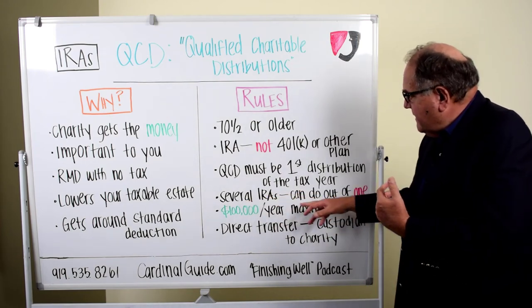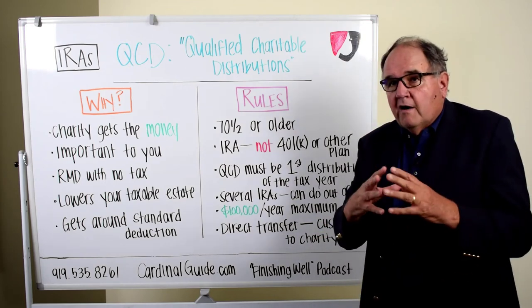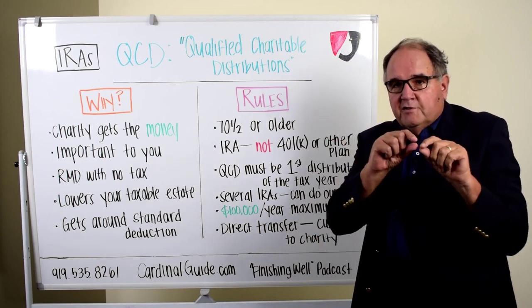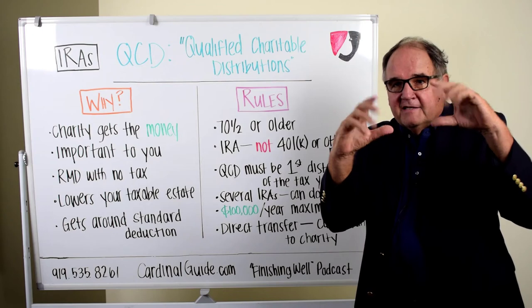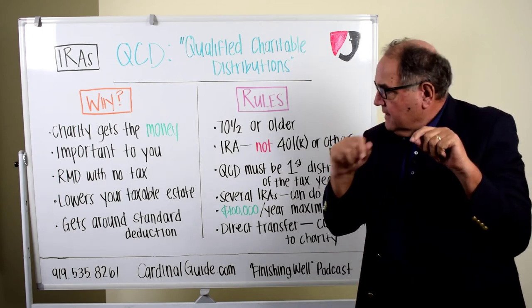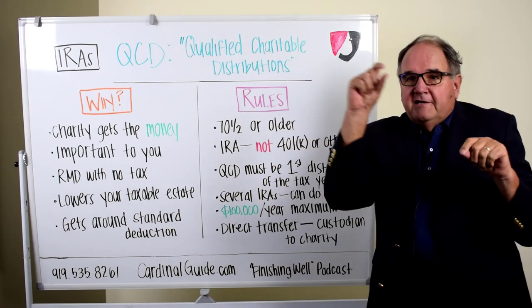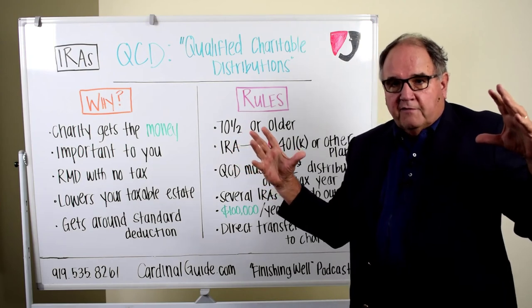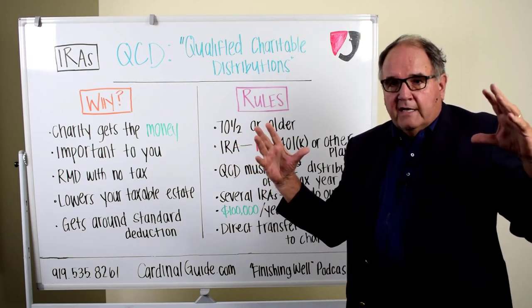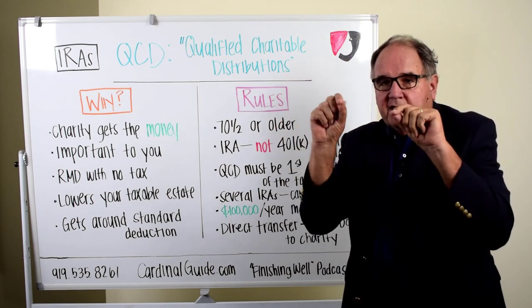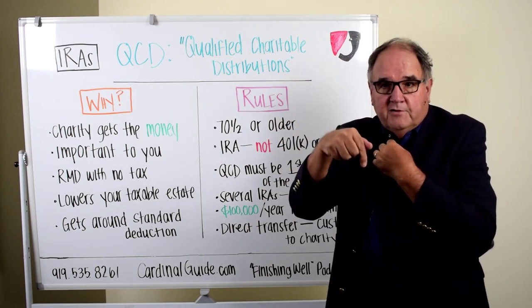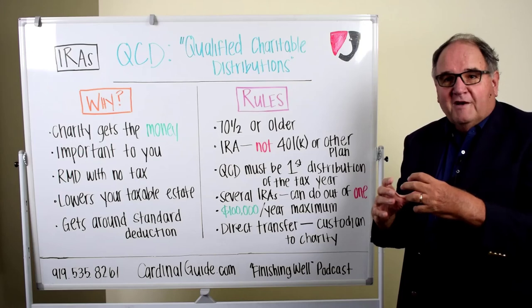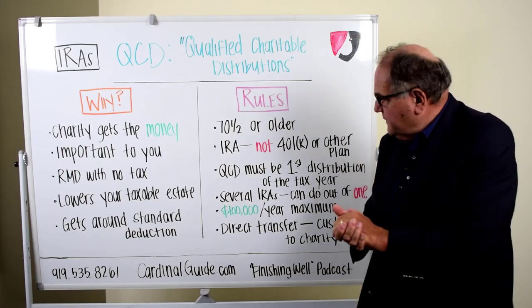If you have several IRAs, a lot of folks don't realize that each IRA sends you a separate notice telling you what your required minimum distribution is for that specific IRA. Many people think they need to take the RMD out of each IRA separately, but that's not the case. We can aggregate all your IRAs for a person and take the total RMD — or do the QCD — out of just one of them, and there can be investment reasons for doing that.